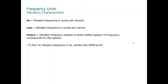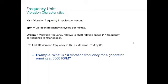The different units for frequency are: frequency expressed in hertz or cycles per second, CPM in cycles per minute, or vibration expressed in orders relative to the rotation speed. One X means the vibration at running speed. To find the one X vibration frequency in hertz, divide the RPM by 60. If your machine is running at 3000 RPM, 3000 RPM divided by 60 is 50 hertz.